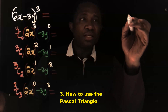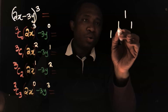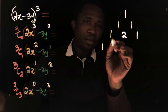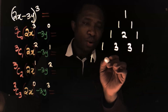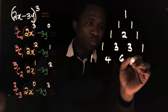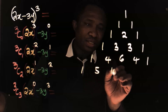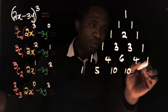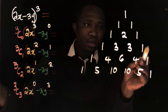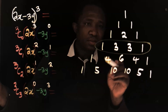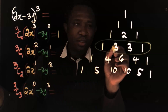The third method is using Pascal's triangle. The rows are: 1; then 1, 1; then 1, 2, 1; then 1, 3, 3, 1; then 1, 4, 6, 4, 1; and 1, 5, 10, 10, 5, 1. Because the highest power here is 3, we choose the row 1, 3, 3, 1. So 3C0 is 1 and 3C1 is 3, and so on.